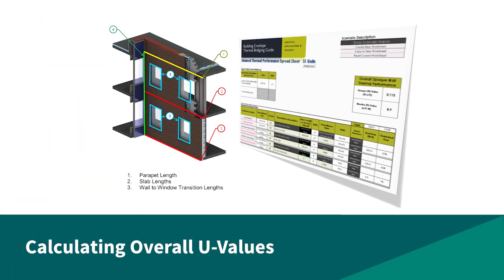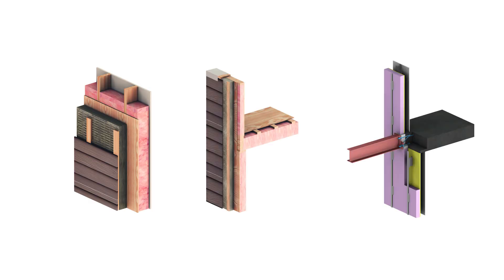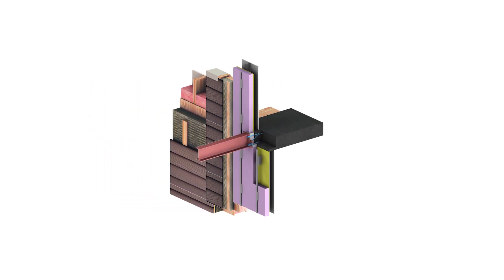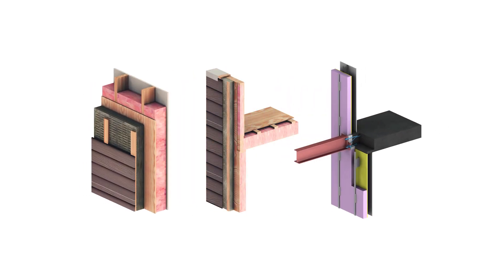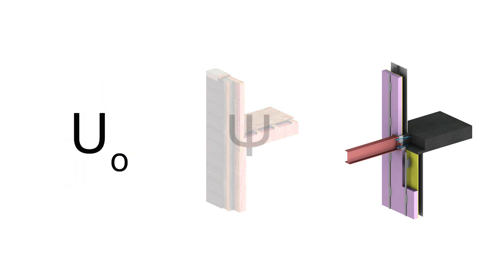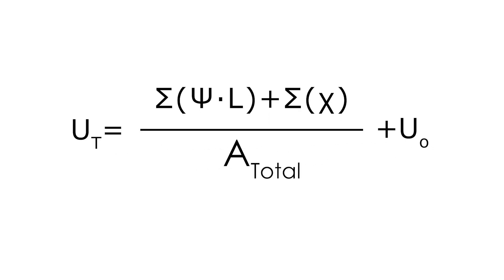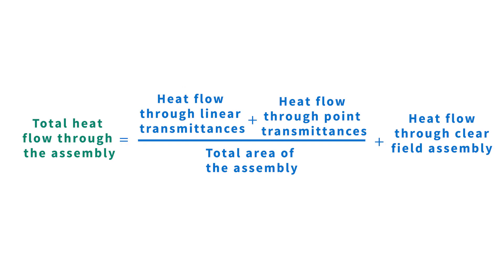Calculating overall U values. With these three types of thermal transmittances — clear field, linear, and point — we can now calculate the overall assembly U value that includes all the impacts of thermal bridging. Since the performance of these details have been calculated separately as the clear field U value, the psi value, and the chi value, the heat loss they create can be simply added together. Therefore, the overall assembly U value can be calculated using this equation. In essence, the total heat flow through the assembly is equal to the heat flow through the linear and point transmittances divided by the total area of the assembly, plus the heat flow through the clear field portions of that assembly.